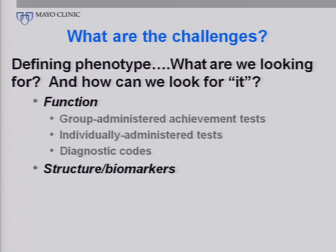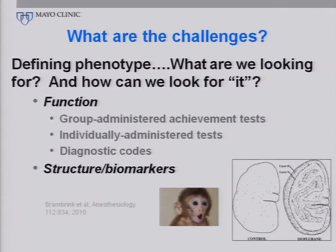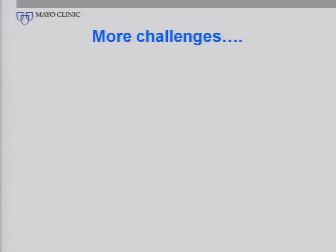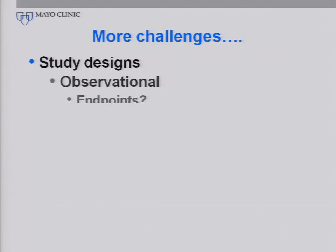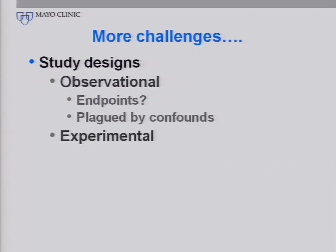We can look at the intermediate or surrogate outcomes — structure, biomarkers. We've had a nice discussion already about some of the possibilities here, for example in the rhesus. But we are still not entirely sure what the right structural marker might be or what the right biomarker might be. We've talked already about the problems with studying this in people — observational studies that have, as of yet, undefined endpoints. We don't know exactly what we're looking for, and these will always be plagued by a variety of different confounds.